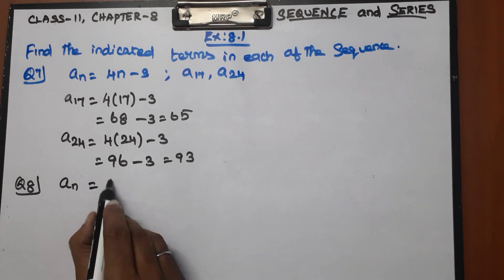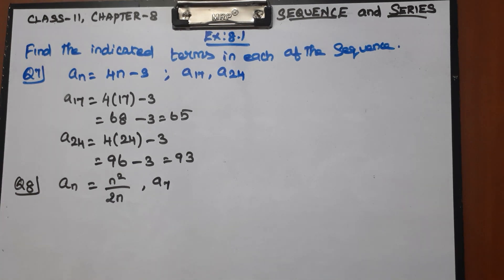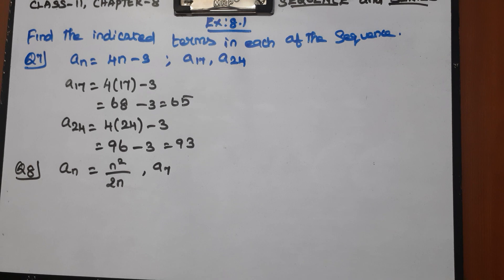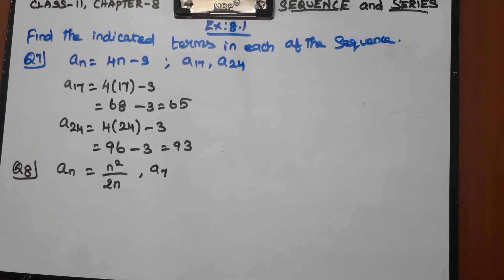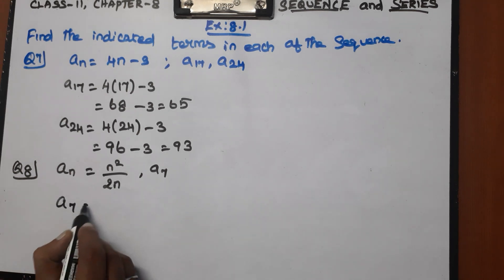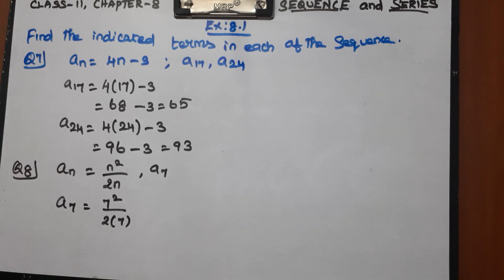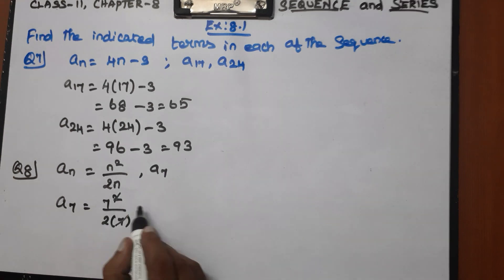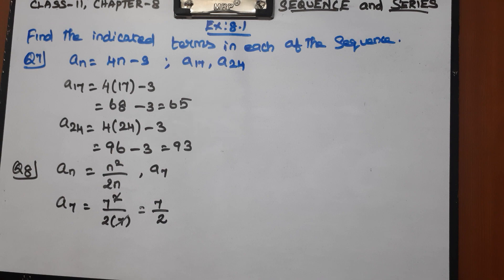Next is Question Number 8. Here we have an equal to n squared divided by 2n. We need to find a7. Substituting n equal to 7, we get a7 equal to 7 divided by 2.